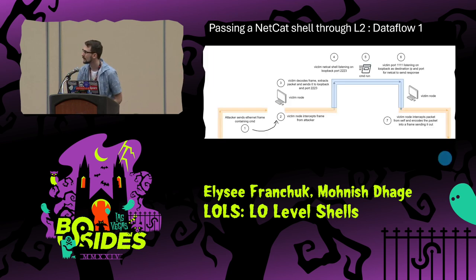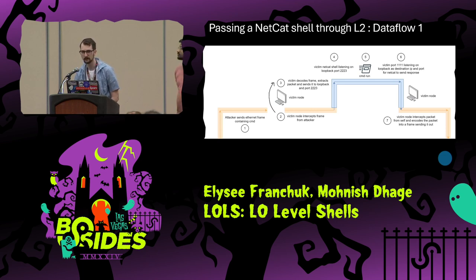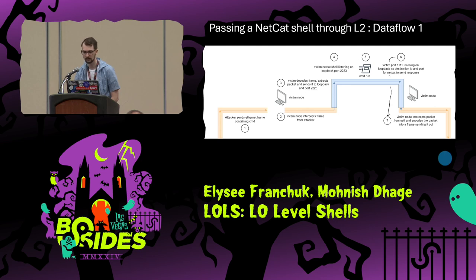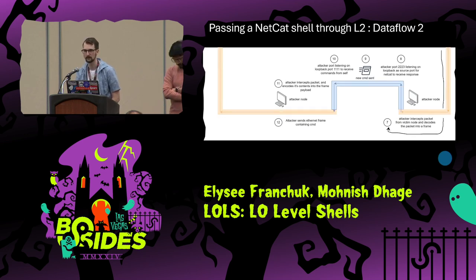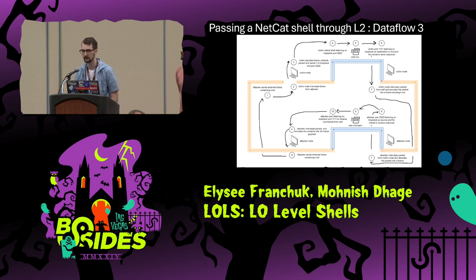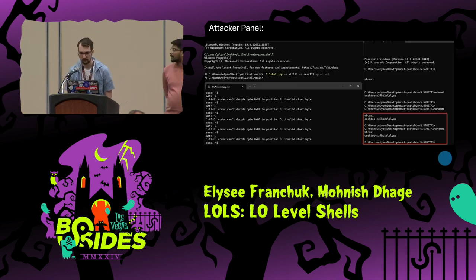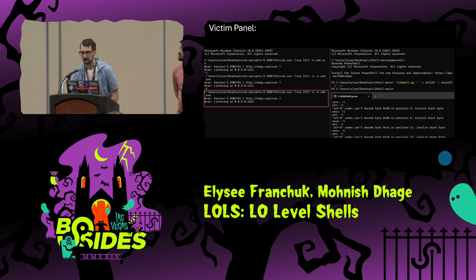Basically, we do the exact same thing. The attacker sends the Ethernet frame, the victim receives it, it then decodes it, and sends it to its own loopback address where Netcat is listening. Netcat can then run that command, the response is sent to its own loopback address and then out to the Ethernet. The exact same opposite happens when the victim is listening, and this enables two-way communication back and forth. But this not only works on Netcat — this works on anything. Here we have the attacker panel where you type in commands for Netcat, and on the victim panel is the actual Netcat command alongside the L2 shell tool.